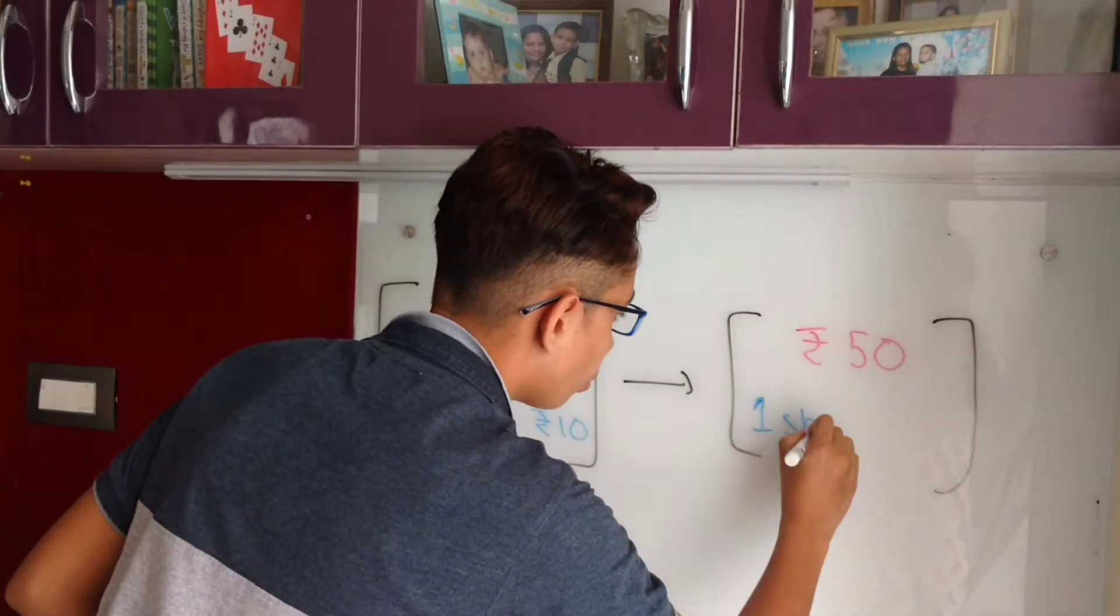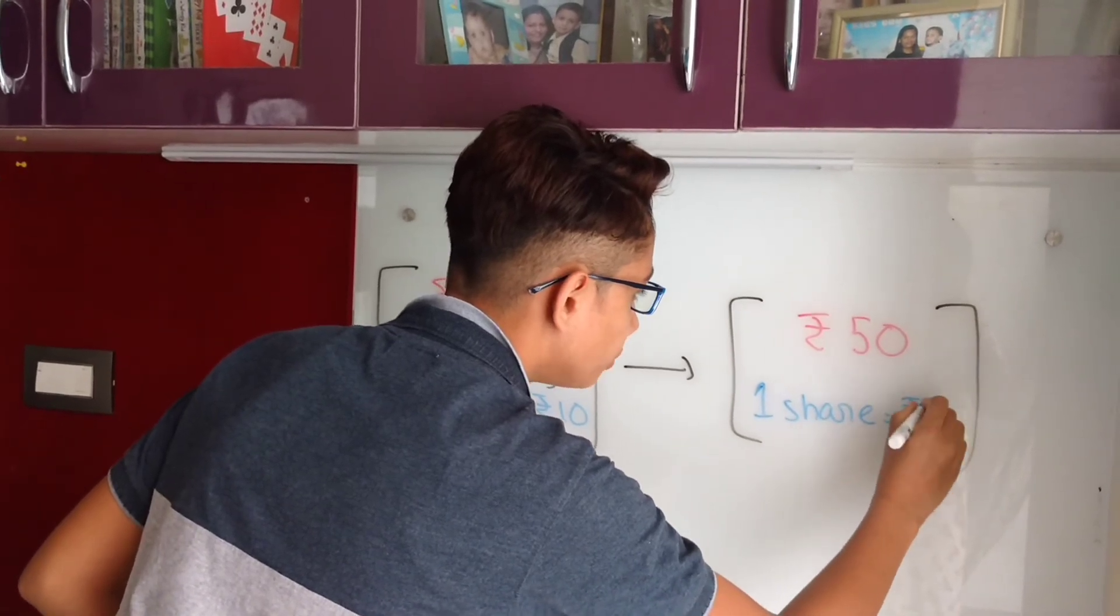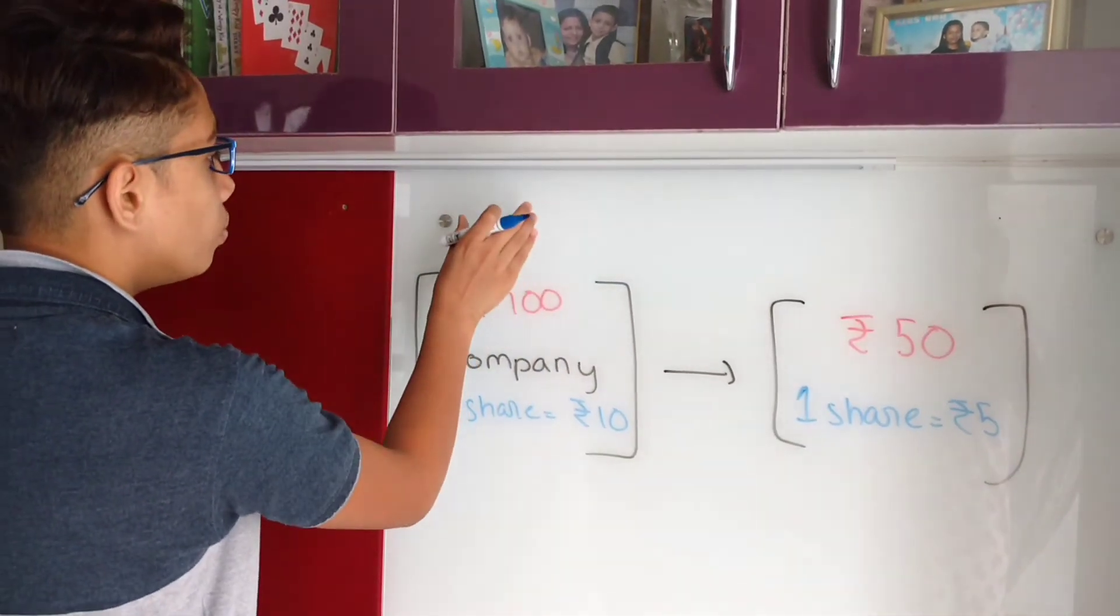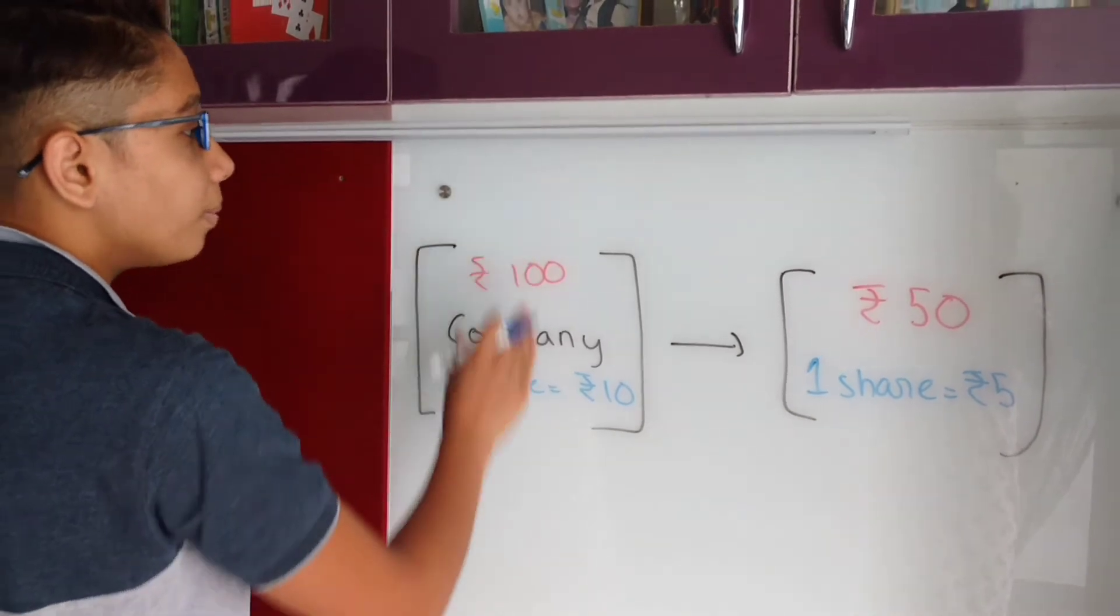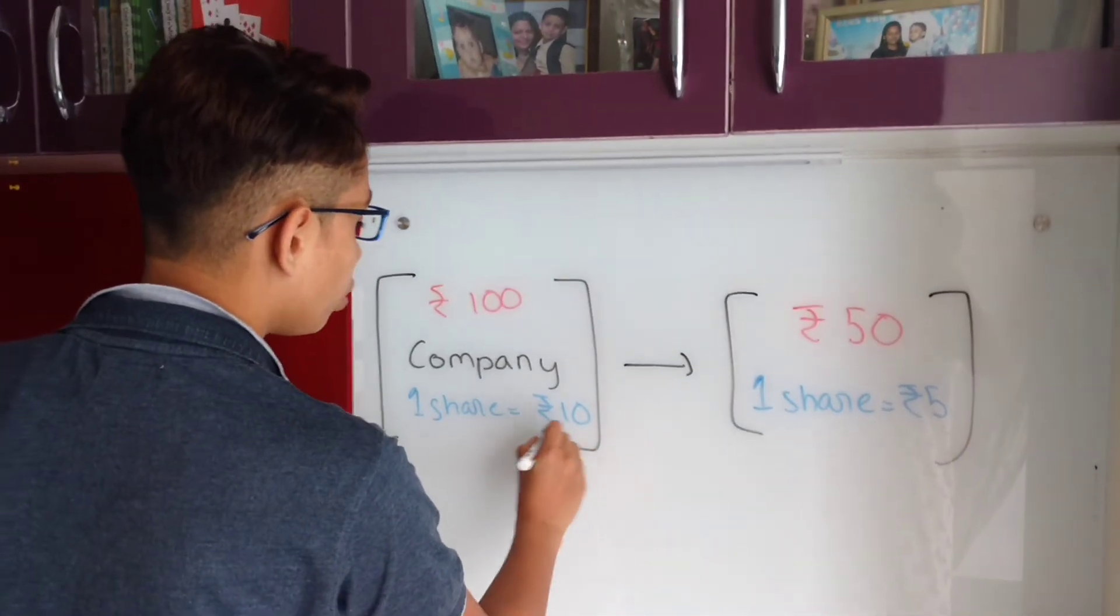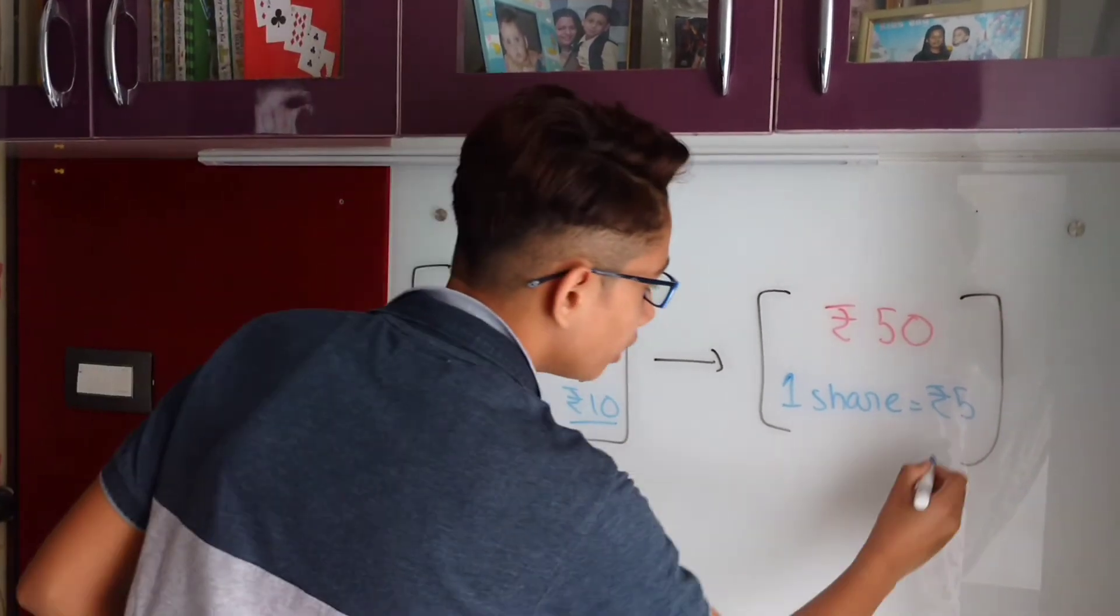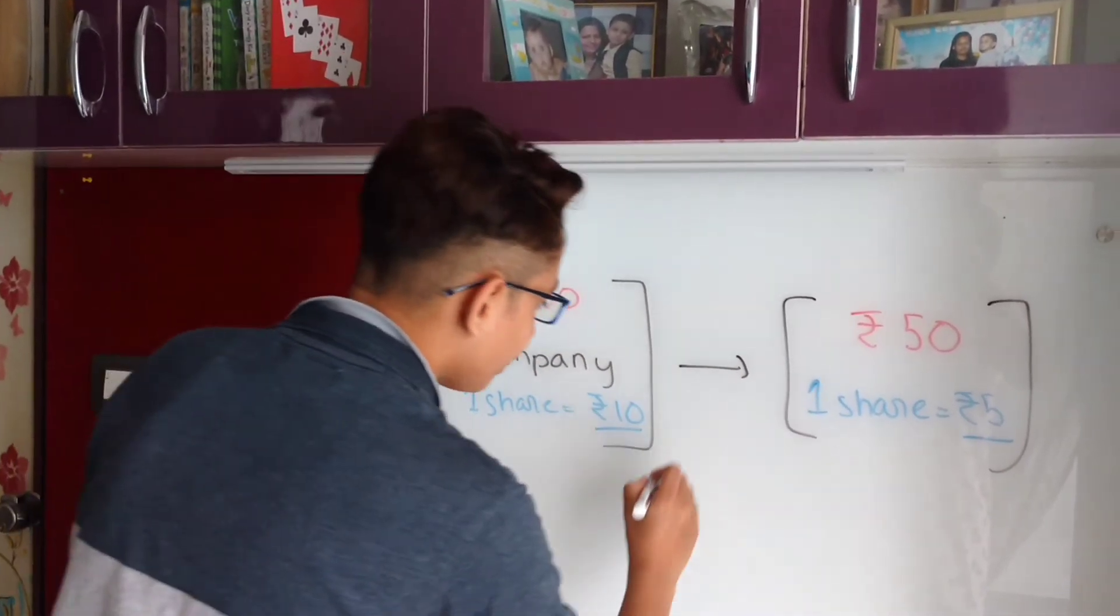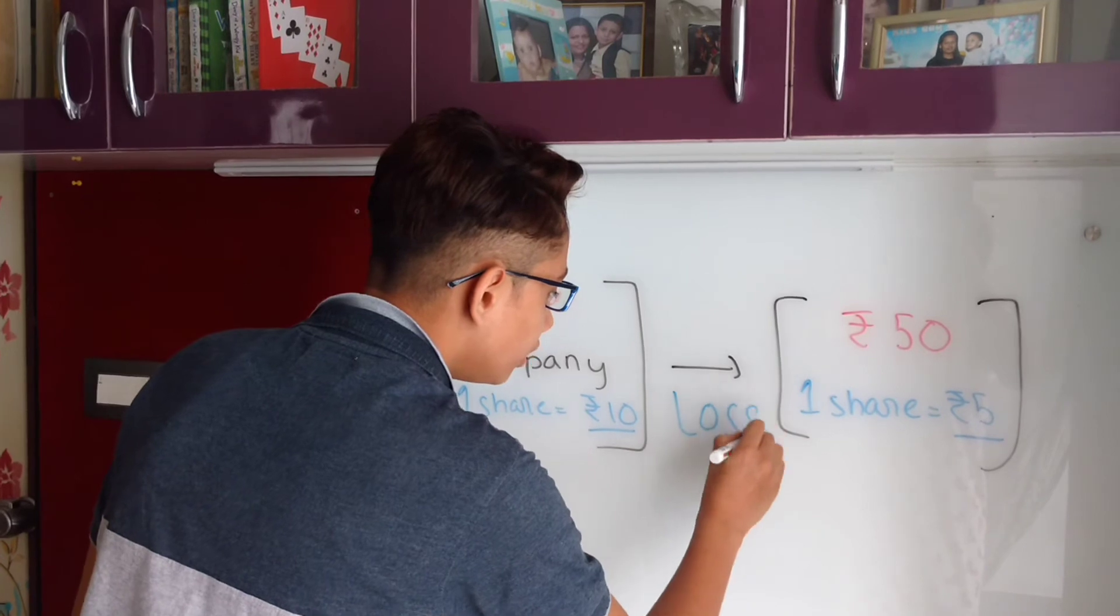That means that one share will now be 5 rupees. So if I invested in the company at this point of time and when I sell my shares at this point of time, I will not get 10 rupees back but I will get half of it, which is 5 rupees. And that is the loss in the stock market.